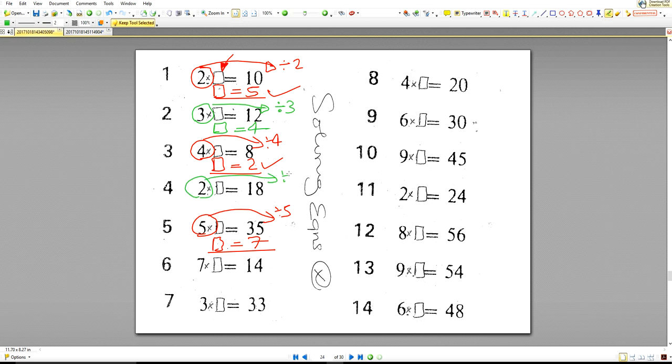Opposite of times by two is divide by two. So the box is equal to nine. Opposite of times by seven is divide by seven. So the box is equal to two. Opposite of times by three is divide by three. So the box is equal to 11.